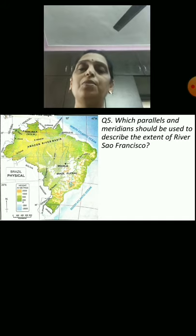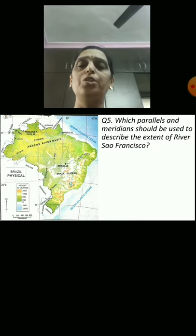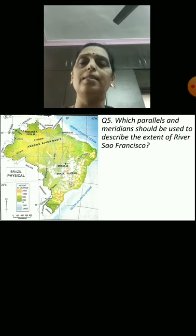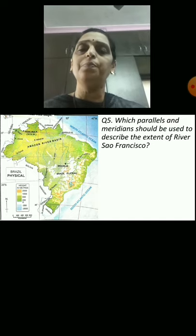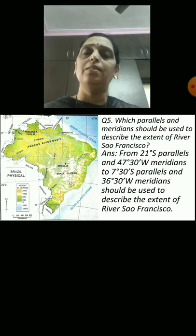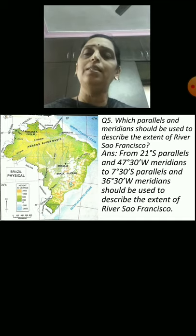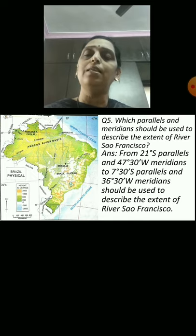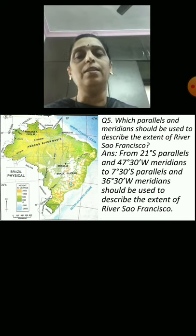Question 5: Which parallels and meridians should be used to describe the extent of River São Francisco? The answer is from 21 degrees south parallels and 47 degrees 30 minutes west meridians, to 7 degrees 30 minutes south parallels and 36 degrees 30 minutes west meridians, to describe the extent of River São Francisco.